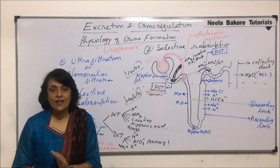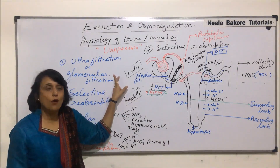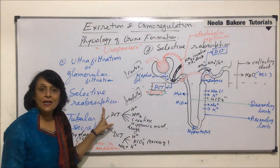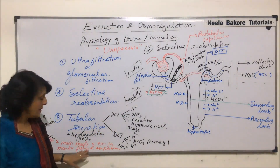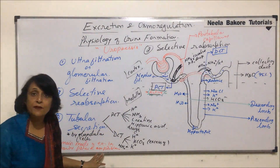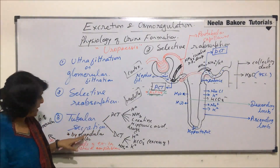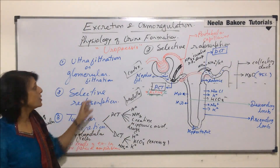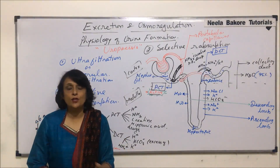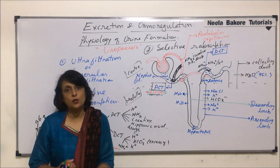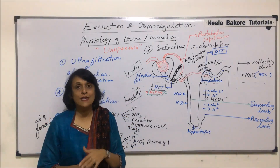In higher organisms like human beings, the three steps involved in urine formation are ultrafiltration, selective reabsorption, and tubular secretion. But in certain lower vertebrates like marine fishes and some amphibians, the main mode of excretion is only tubular secretion — ultrafiltration is not seen in them because they don't have a glomerulus. Ultrafiltration is mainly associated with glomerular filtration, which takes place in the Bowman's capsule.